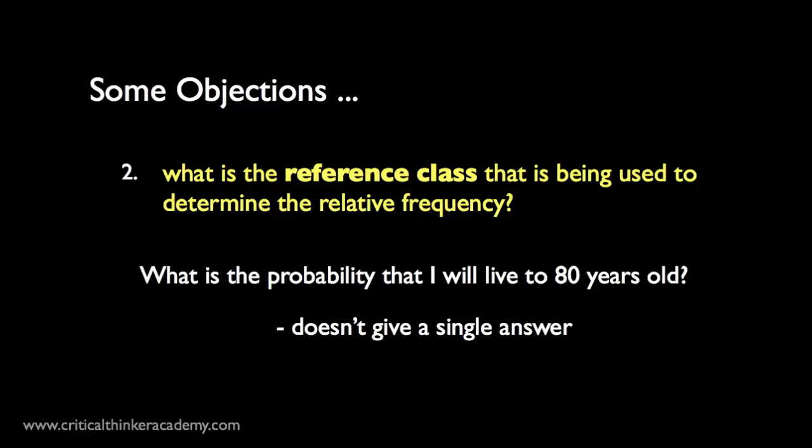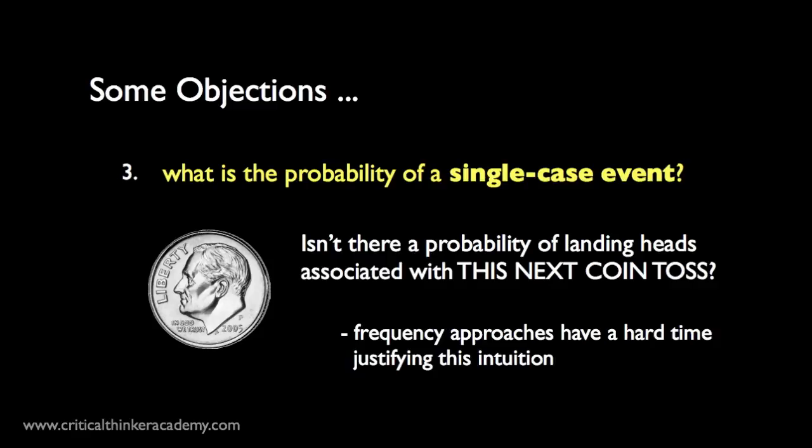And single case probabilities are another category of objection to frequency interpretations. When I toss a coin, it doesn't seem completely crazy to think that for this one single coin toss, there's an associated probability of that toss landing heads. But frequency interpretations have a hard time justifying this intuition. Now, this is important to see. On the frequency interpretation, probabilities aren't assigned to single trials. They're assigned to actual or hypothetical sequences of trials.